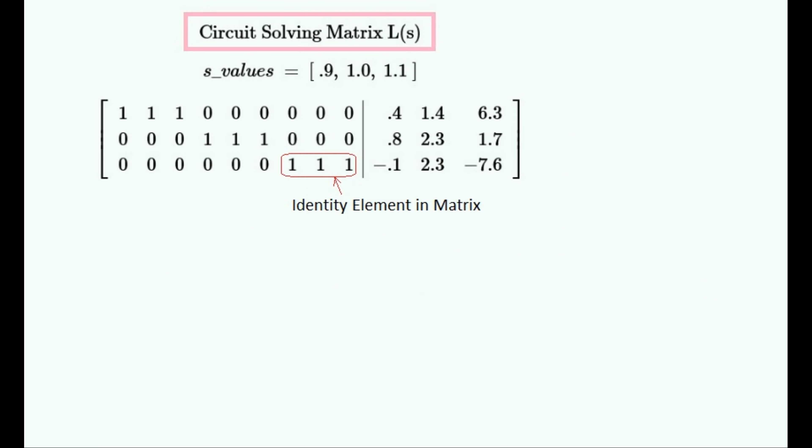Then you'd reduce this matrix to a form that looks like this, where three ones in a row would be the identity element. So this is a sort of identity matrix in this case.